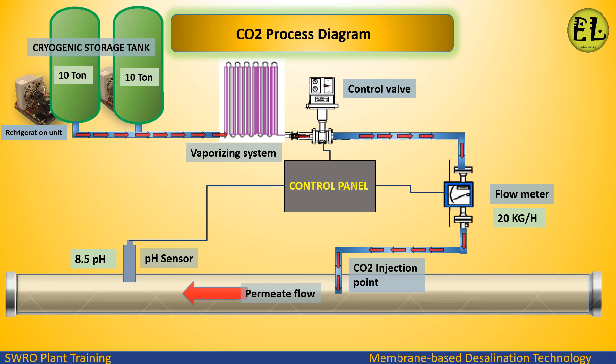CO2 is passed to the vaporizing units, which help to drop the temperature below the given critical level. Then CO2 is injected into the product flow line. The control panel controls the flow of CO2 dosing with the help of a control valve, according to the required pH which is measured by a pH sensor.